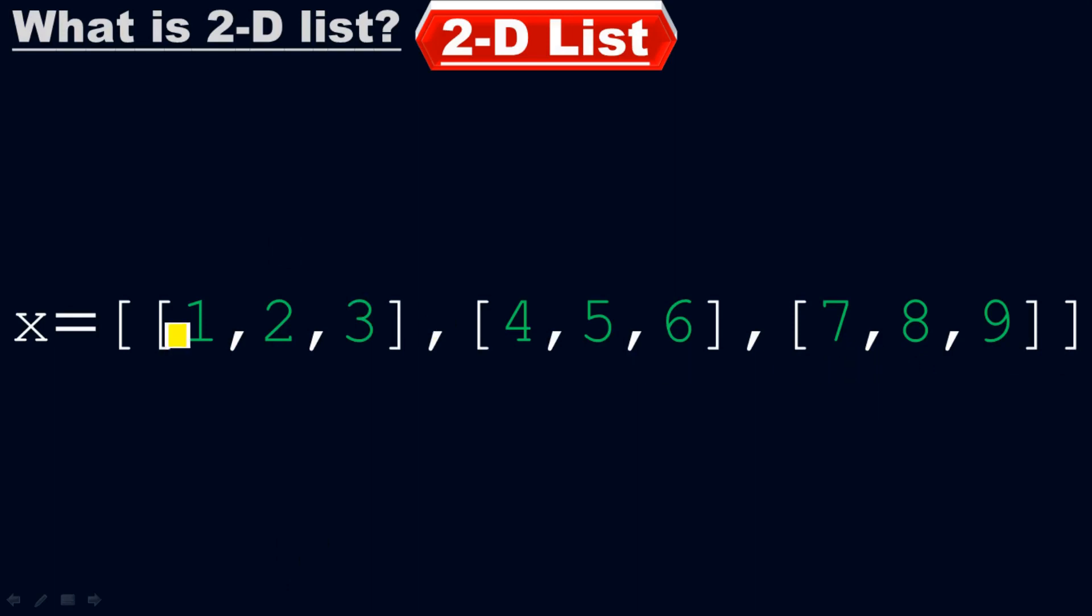If you remember, last time we had only numbers or strings, but this time each item and each element of the list is a list. So we have list within the list, and that is the reason we call it two-dimensional list. I hope you got the point now.